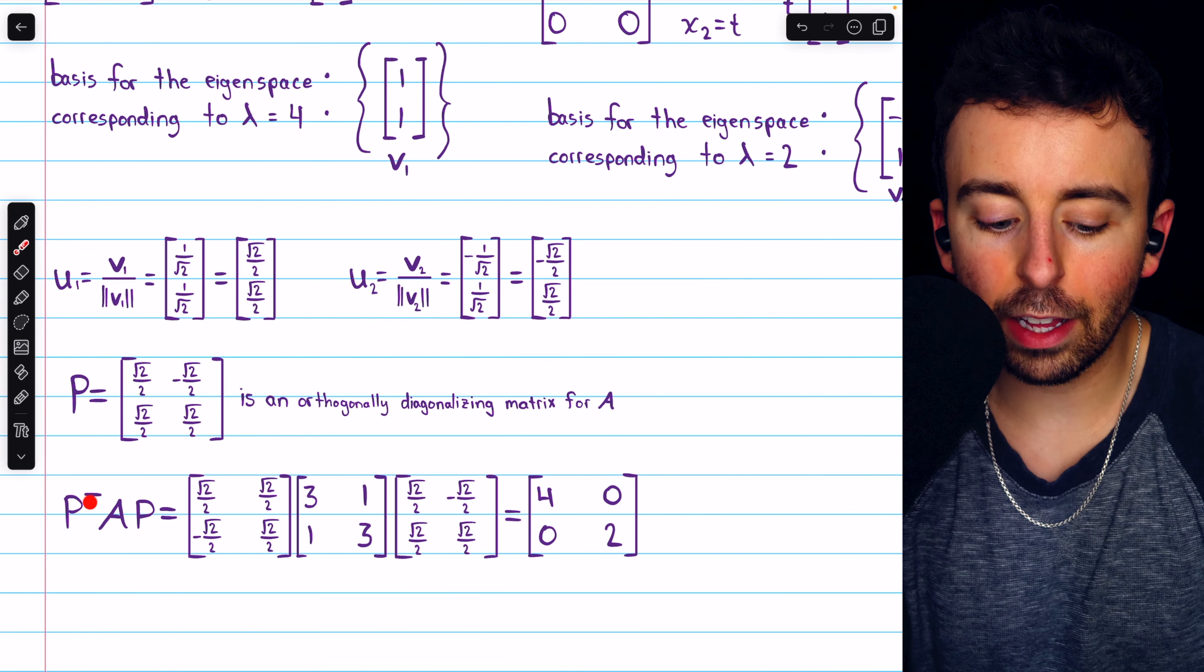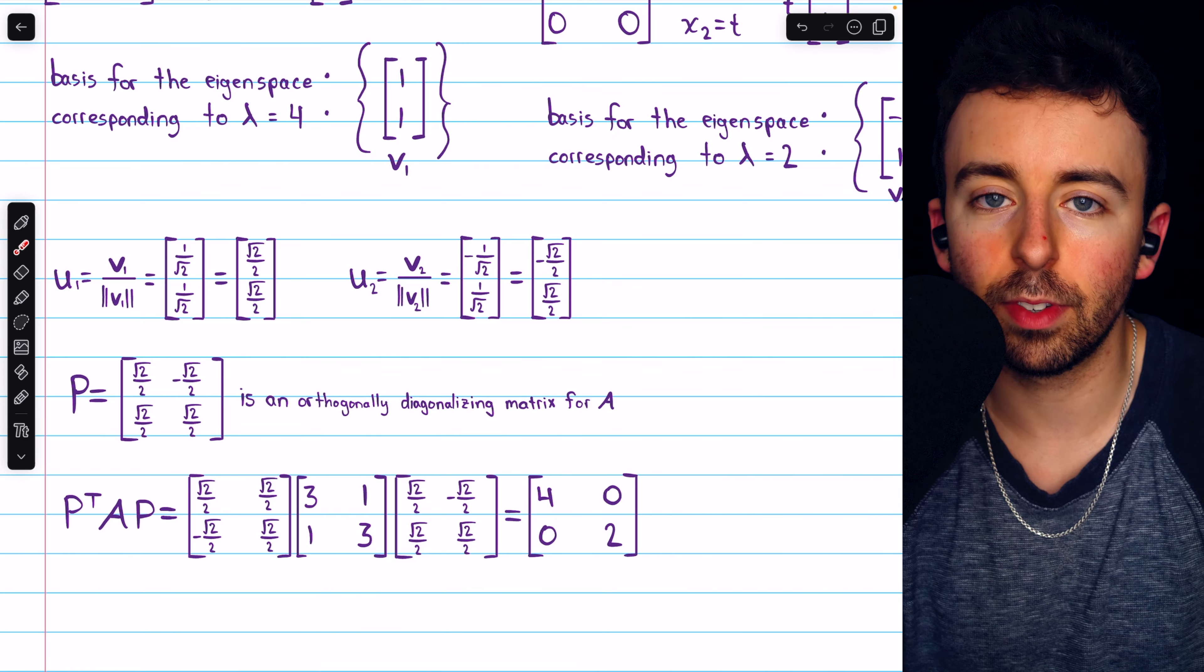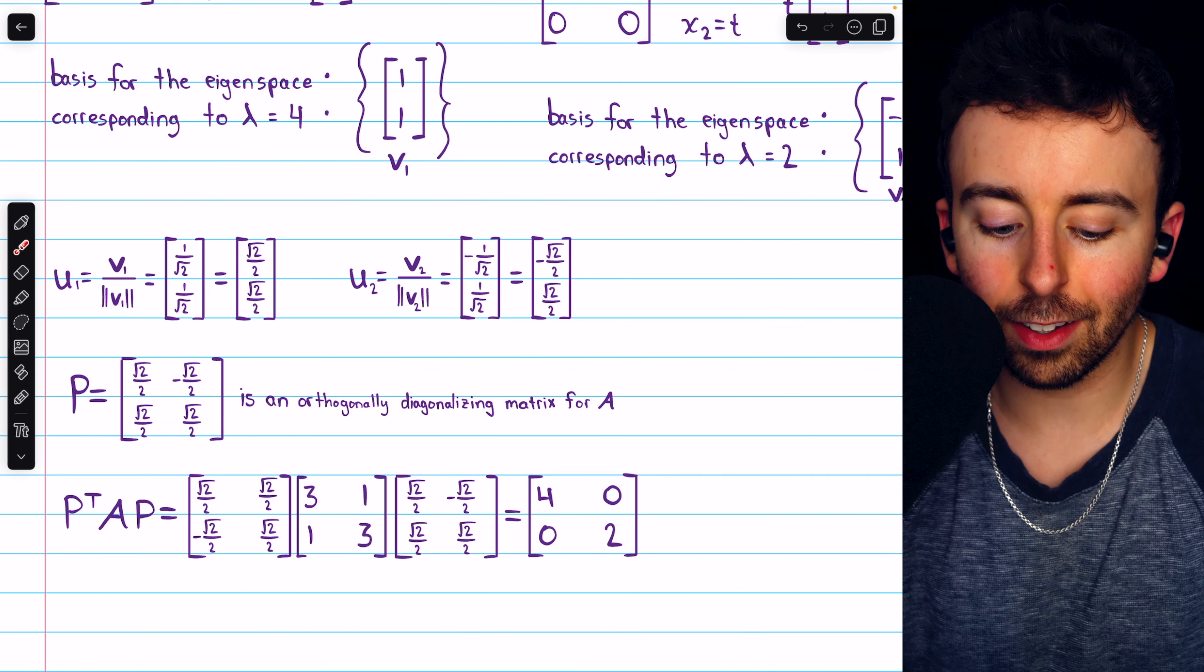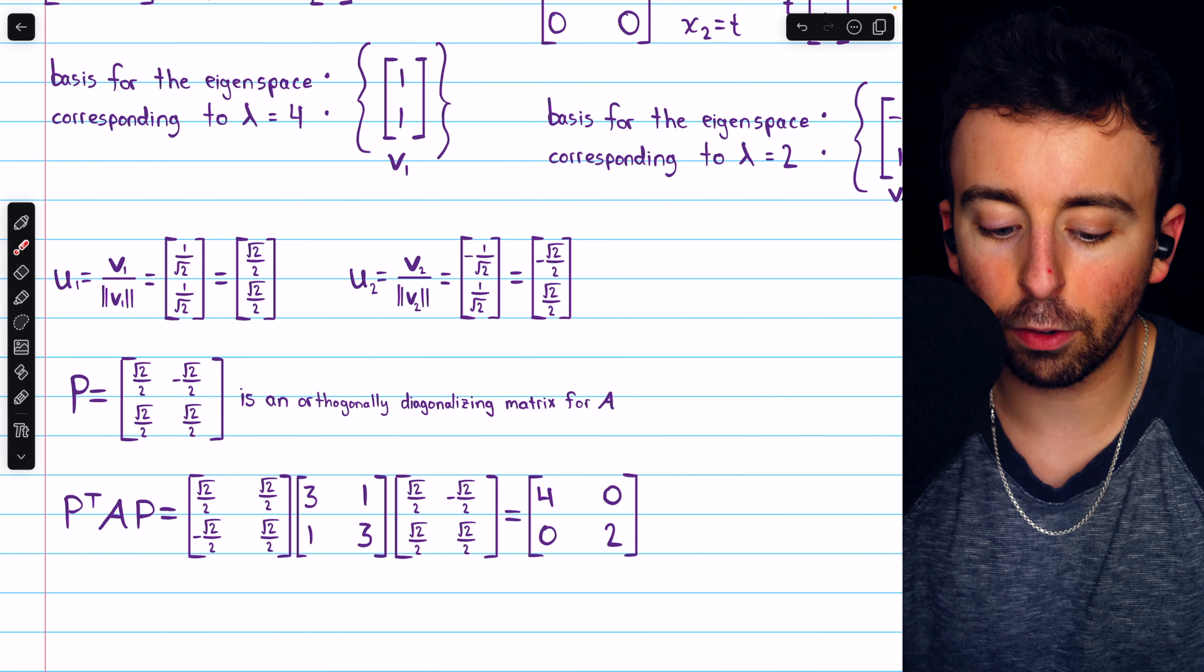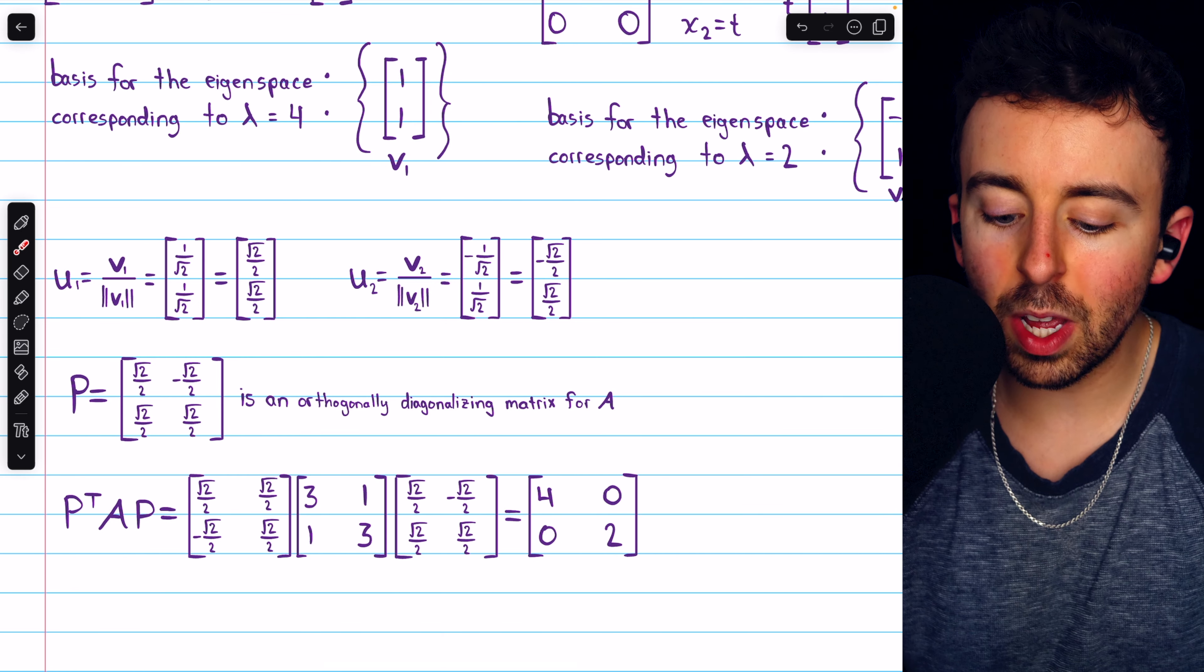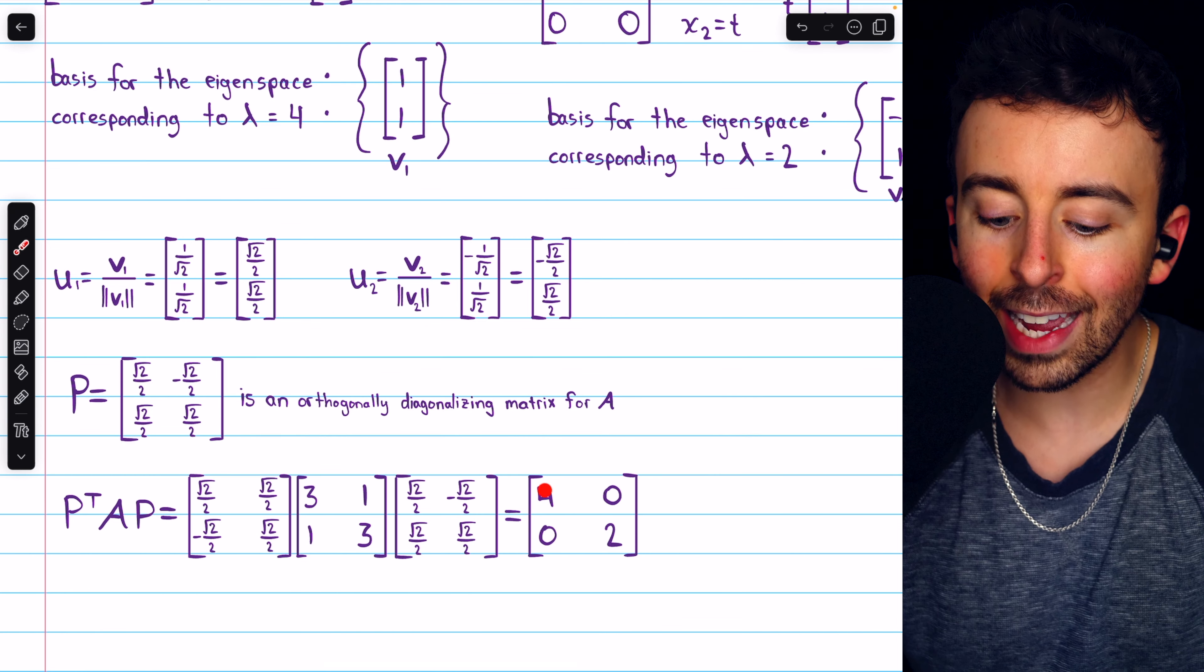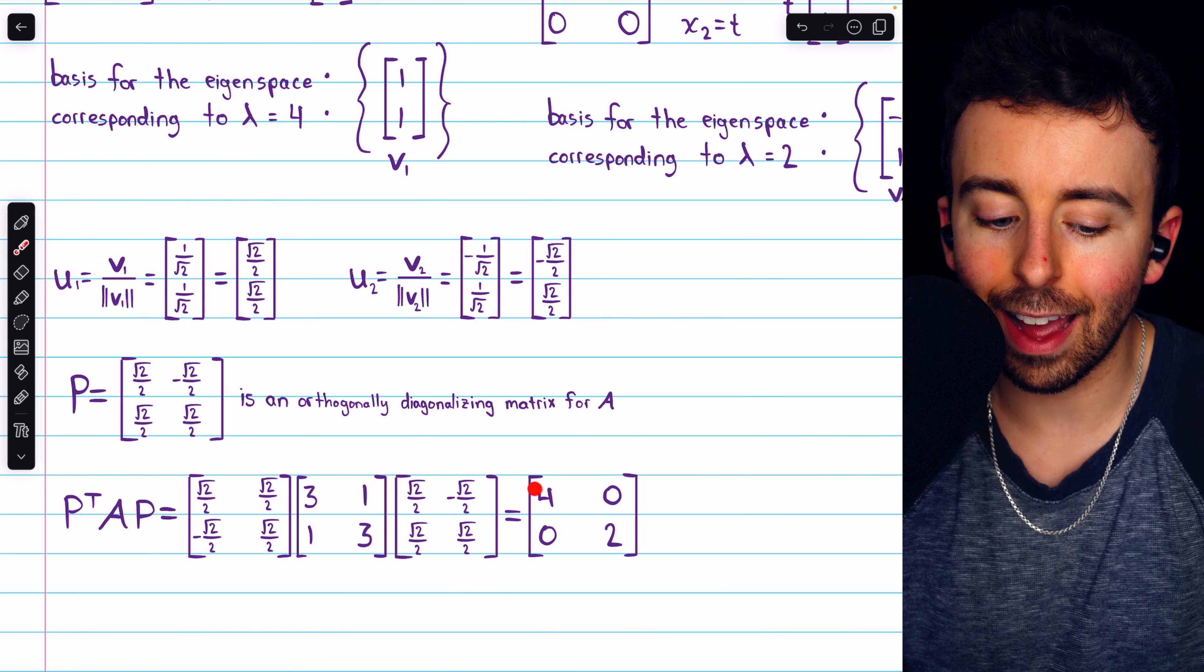And there it is. P transpose AP, which is the same as P inverse AP since P is orthogonal, looks like this. There's P transpose, there's A, there's P. And if you do all this multiplication, you get this diagonal matrix. It's a diagonal matrix with the eigenvalues of A on the diagonal.